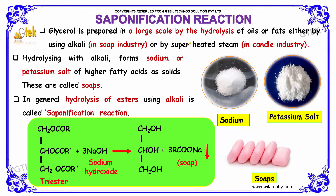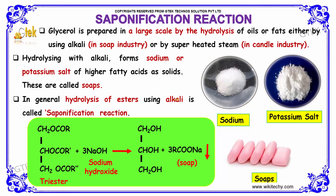Glycerol is first prepared in large scale by the hydrolysis of oils or fats, either by using alkali or by superheated steam. This process is known as saponification reaction. Hydrolysis with alkali forms sodium or potassium salts of higher fatty acids as solids, which are called soaps.